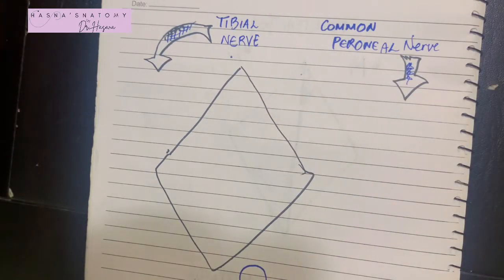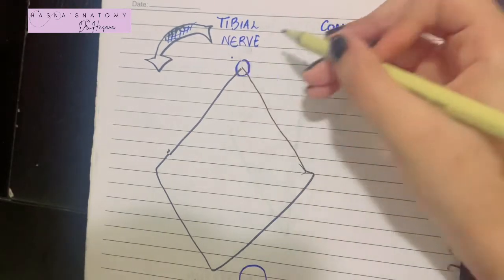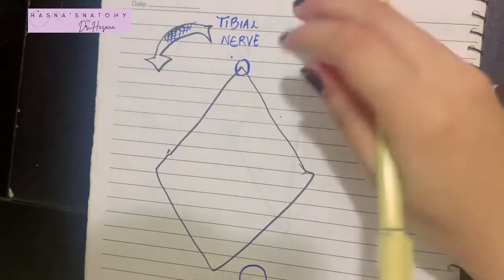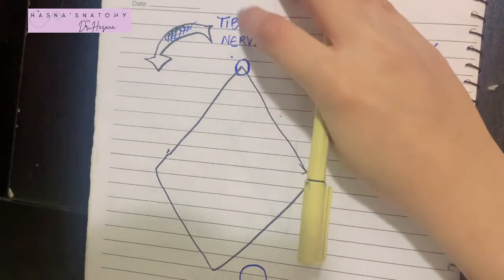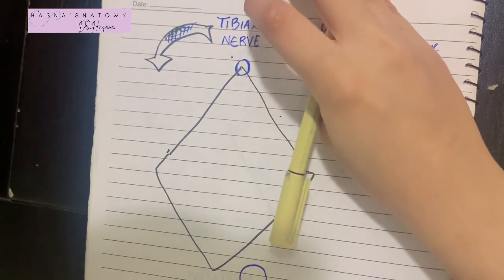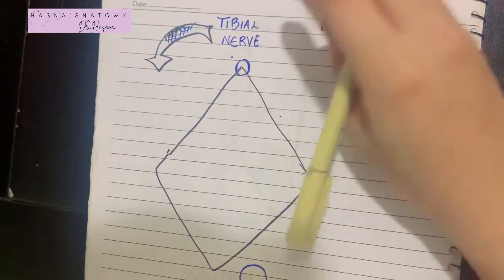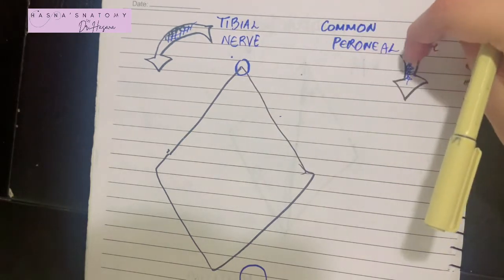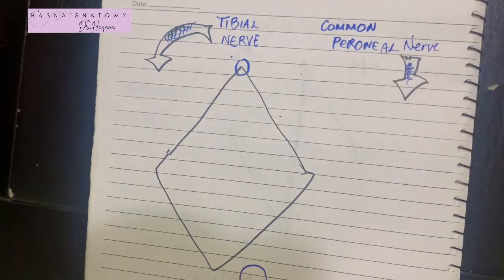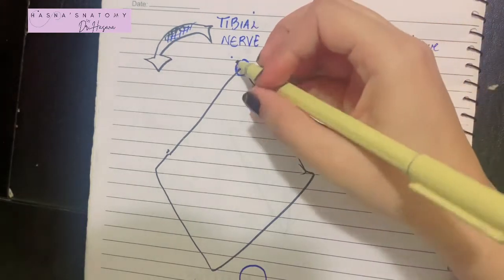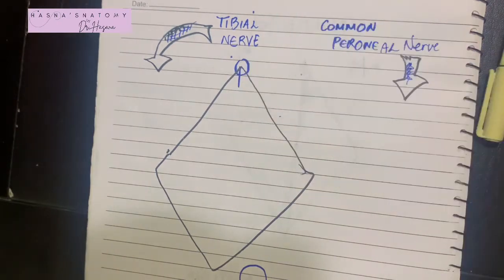What is the origin, course, and termination along with its branches? The tibial nerve originates from the sciatic nerve at the superior angle of the popliteal fossa — this entire diamond-shaped structure I've drawn. Tibial means medial, just like in the upper limb where ulnar was medial. The common peroneal nerve can also be called the common fibular nerve, and fibular means lateral. So tibial is medial and fibular is lateral, and the tibial nerve has a more straight course in the popliteal fossa.